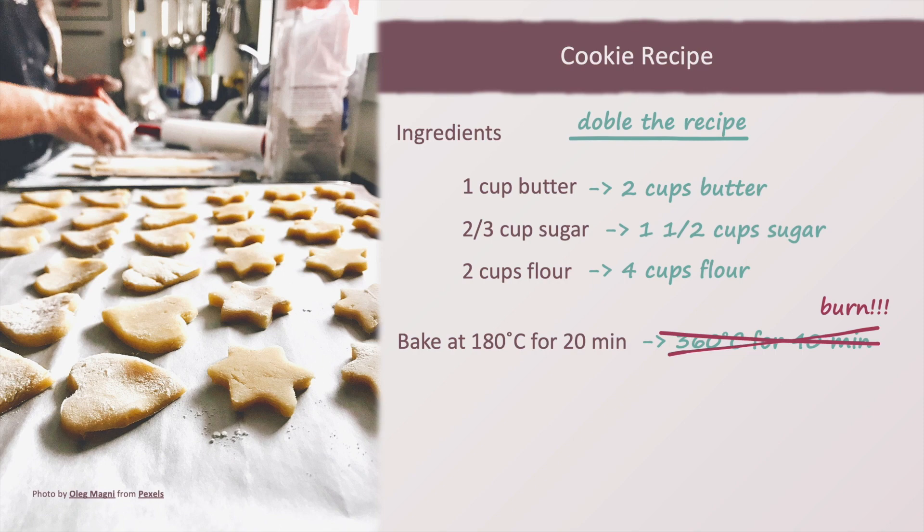This example seems almost silly. Everyone knows that we can double the ingredients, but we cannot double the baking time and temperature. But the aim here is to rationalize why they behave differently.